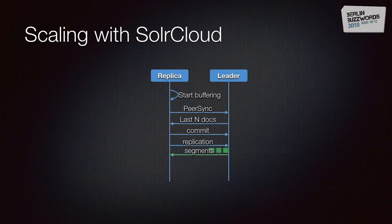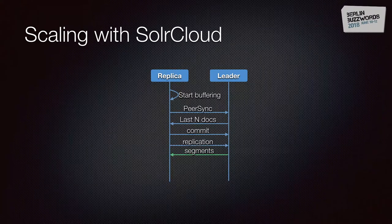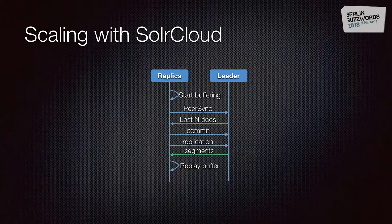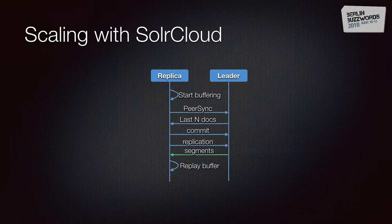The replica updates those documents in the index, replays the buffer, and then becomes active. But if more than 100 documents are missing (or whatever number you configure), the replica recovers by doing the same segment recovery used in master-slave. It commits to the leader, starts replication, downloads all the segments, replays the buffer, and then becomes active.